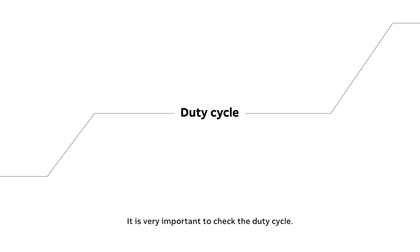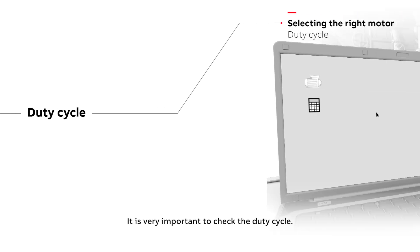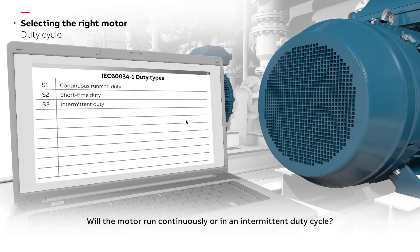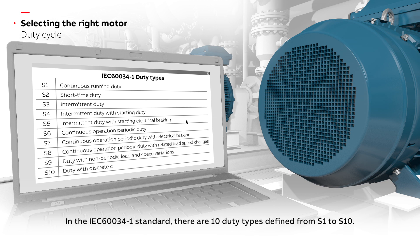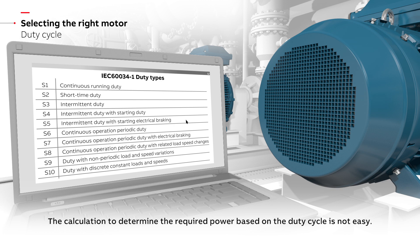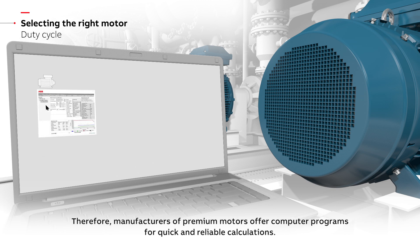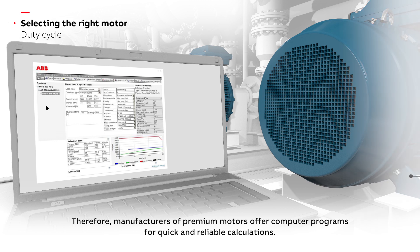It is very important to check the duty cycle. Will the motor run continuously or in an intermittent duty cycle? In the IEC 60034-1 standard there are 10 duty types defined from S1 to S10. The calculation to determine the required power based on the duty cycle is not easy. Therefore, manufacturers of premium motors offer computer programs for quick and reliable calculations.